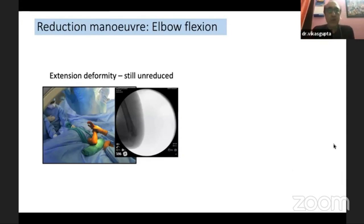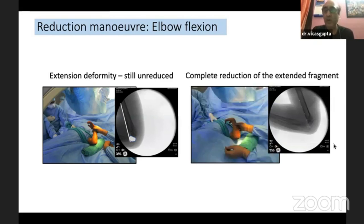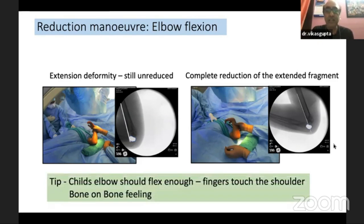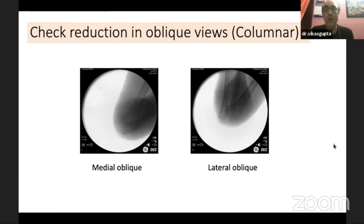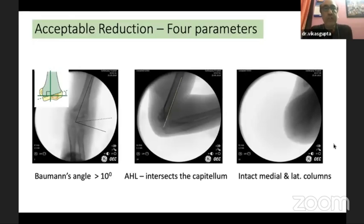After reduction, check that the anterior humeral line is crossing the capitulum. If it is only touching the anterior aspect and not crossing the capitulum, there is still an extension deformity. Confirm complete reduction by checking the anterior humeral line. A tip: when it is completely reduced, the child's elbow should flex enough so that the fingers touch the ipsilateral shoulder. Don't forget to check the oblique views — medial oblique and lateral oblique. Before you start pinning, make sure all four parameters are in place: Baumann's angle is well above 10 degrees, the AHL intersects the capitulum, and the lateral column is intact.